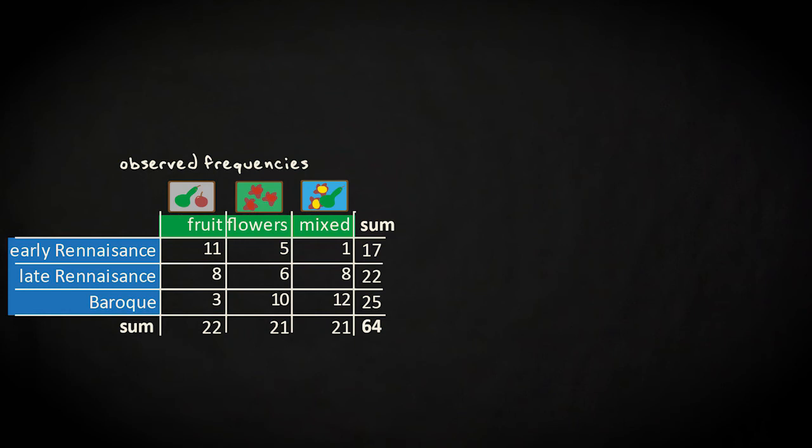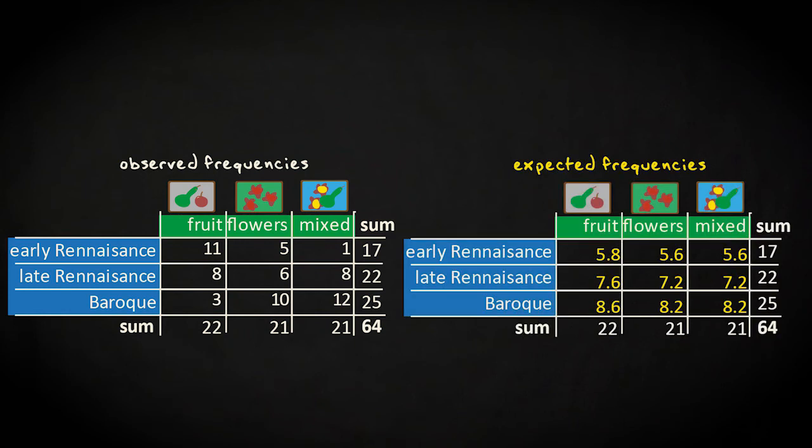I hope you understood the following from this video. The possible dependencies between two categorical variables can be assessed by first summarizing the joint counts in a contingency table, and then, by using the marginal counts per variable, calculate the expected counts for each combination of the two variables.